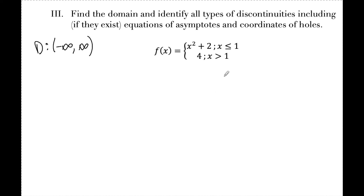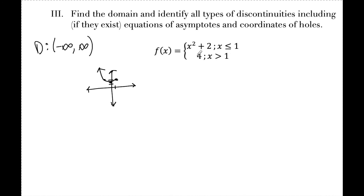With a piecewise function, the concern is a jump discontinuity. Sketching it out: plugging x=1 into x²+2 gives 3, so there's a closed circle at (1,3). For x>1, y=4 with an open circle at (1,4). Since the two y-values at x=1 are not equal to each other, there is a jump discontinuity at x equals 1.